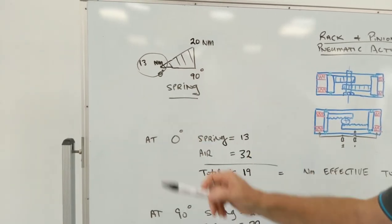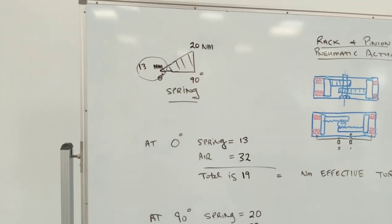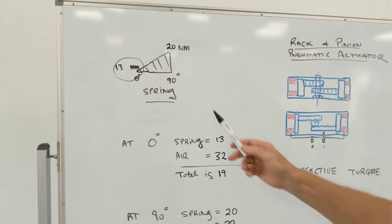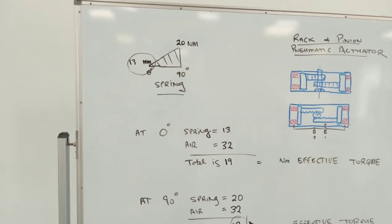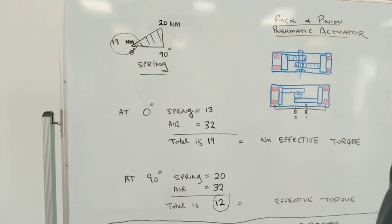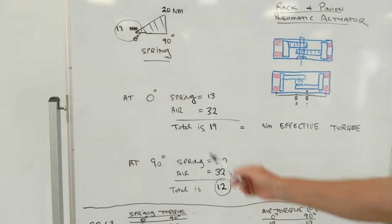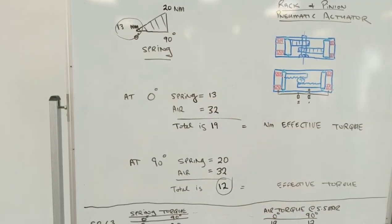The difference between spring at zero and air at 90. Spring at zero and air at 90 are the two torque figures that you're going to be looking at to operate your valve.